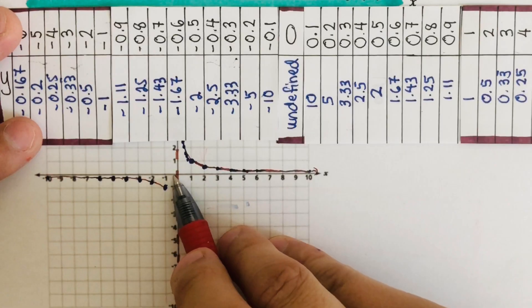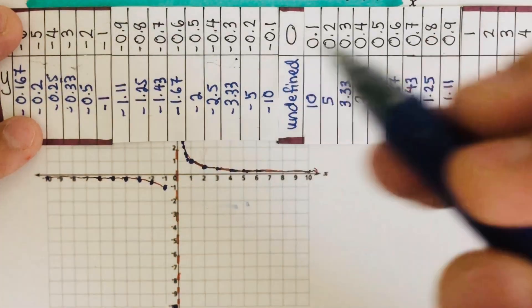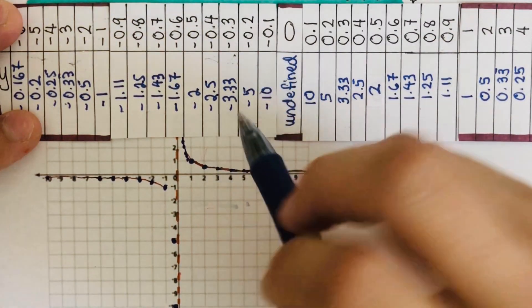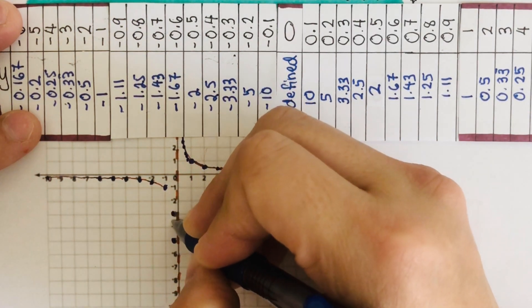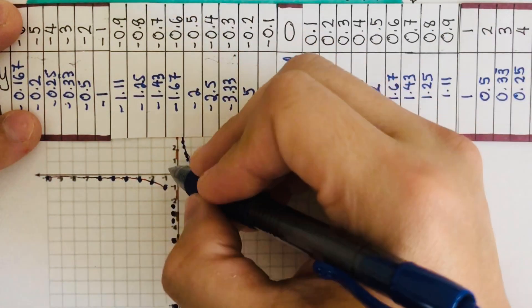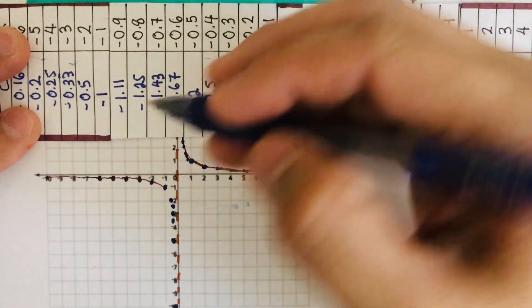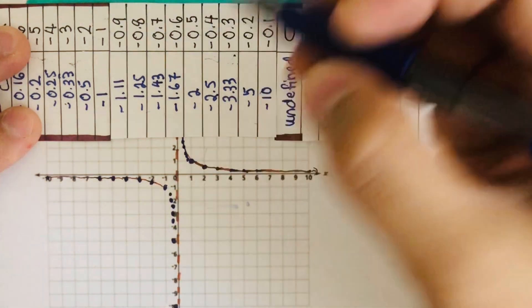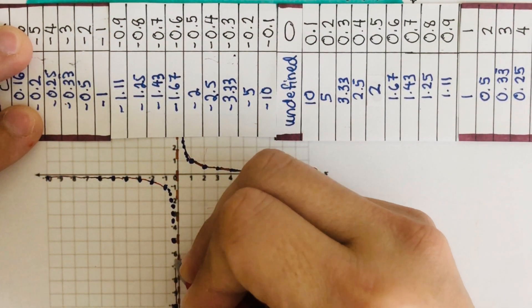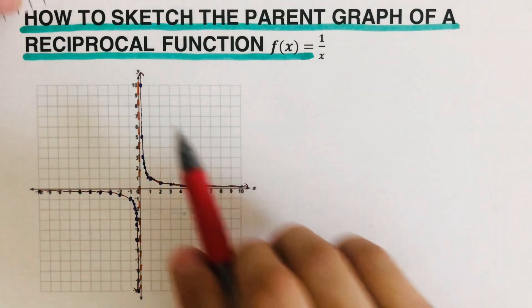For the negative side: at x = -0.1, y = -10; at x = -0.2, y = -5; at x = -0.3, y = -3.33; at x = -0.4, y = -2.5; at x = -0.5, y = -2; at x = -0.6, y = -1.67; at x = -0.7, y = -1.43. These points connect to form the second branch of the curve — the graph of the reciprocal function is now complete.